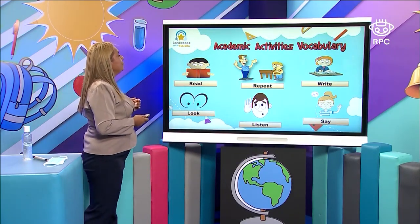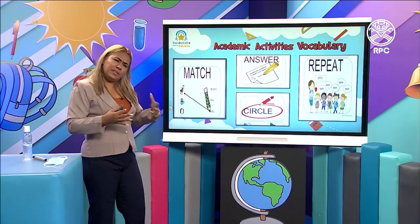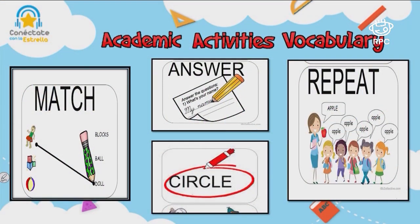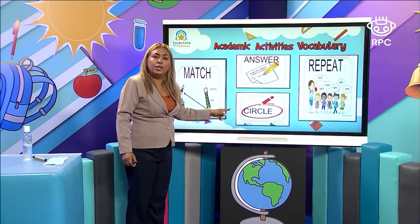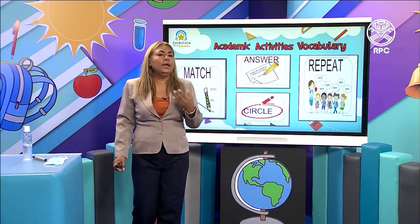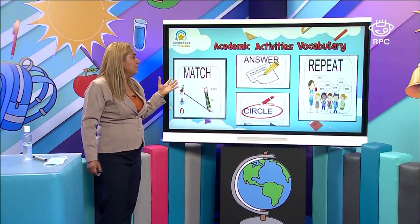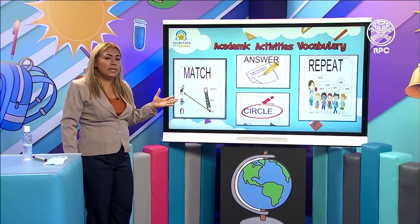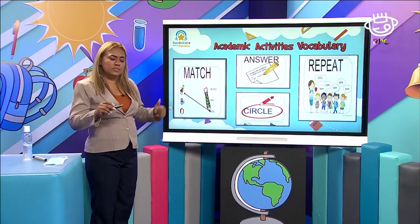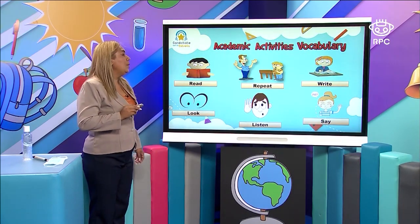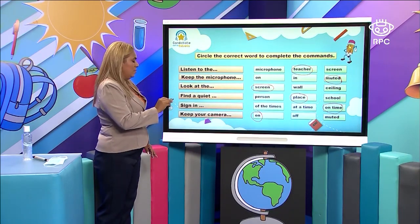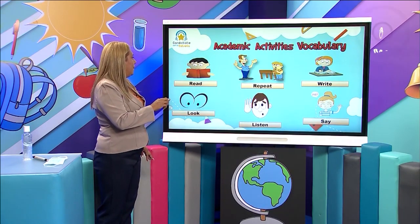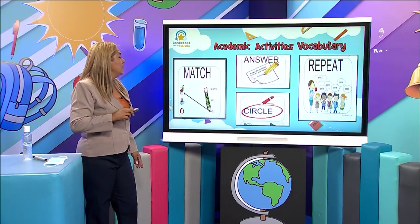When you do an exercise, you also have some activities to complete. For example, sometimes you will match — for example, the picture to the word. You need to answer a question. You can circle the correct answer. Or you can repeat after the teacher. You can see those activities in your exercises, practices, and assignments. Those are the activities you need to complete for successful learning. We have: read, repeat, write, look, listen, say, match, answer, circle, and repeat.